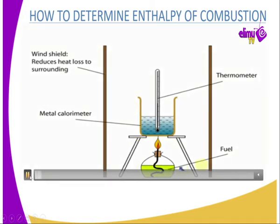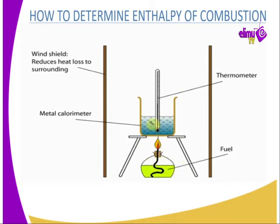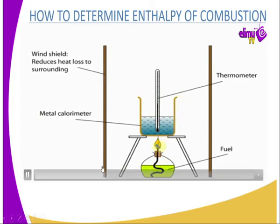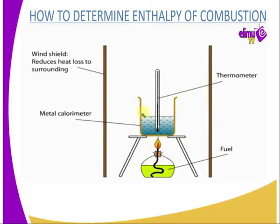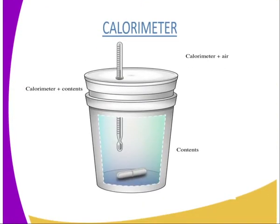The fuel in the burner will lose heat, which will be gained by the water contained in the calorimeter, resulting in an increase in temperature. The key assumption we make is that heat lost by the fuel is equivalent to the heat gained by the calorimeter and its contents. Therefore, the heat gained by the water tells us the heat lost by the burning fuel.